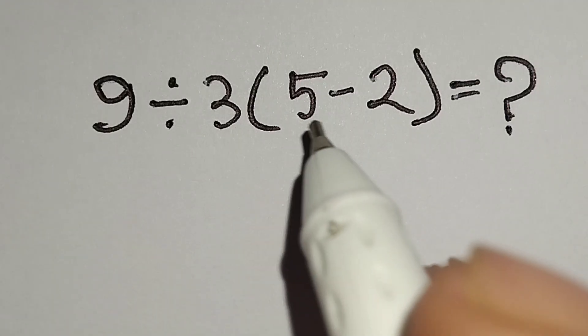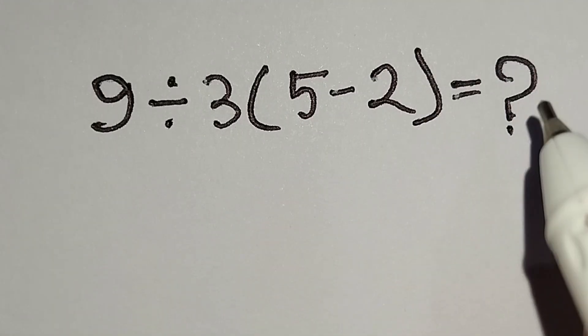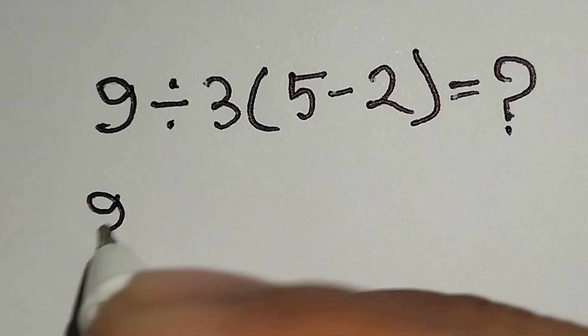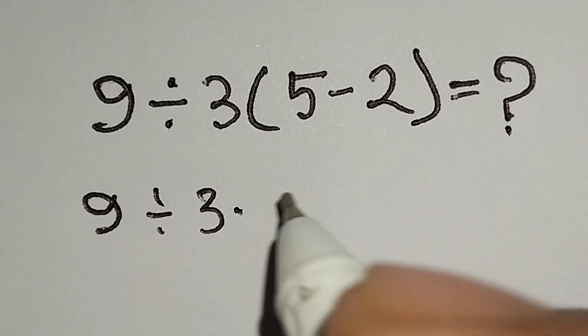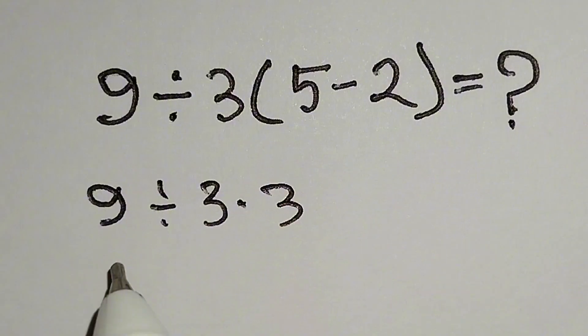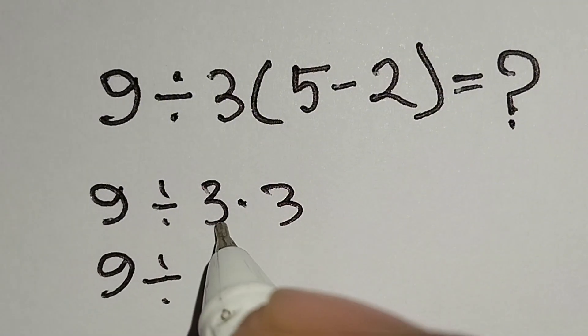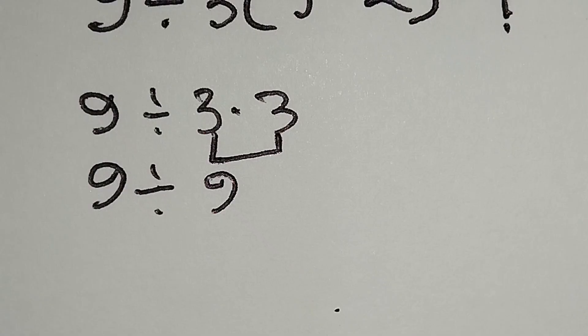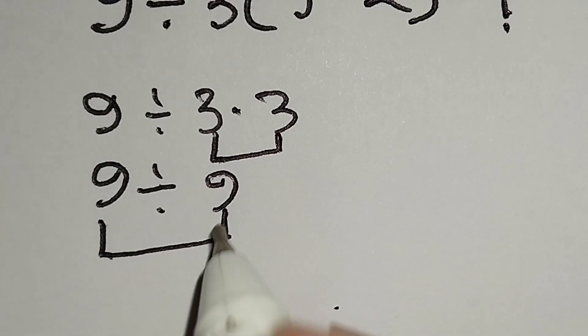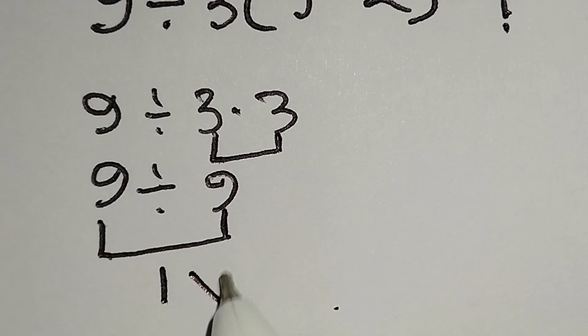9 divided by 3 bracket 5 minus 2 equals what? Here, 9 divided by 3 times 5 minus 2 gives us 3. Then 9 divided by 3 times 3 gives us 9. And 9 divided by 9 gives us 1. But it is not correct.